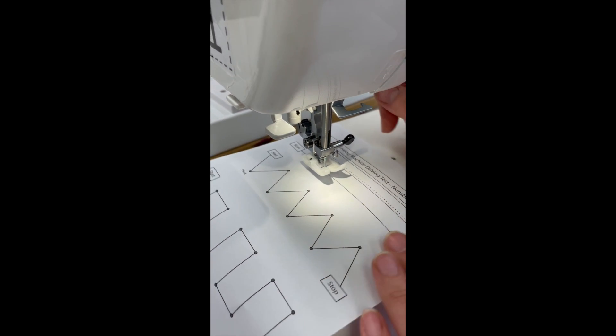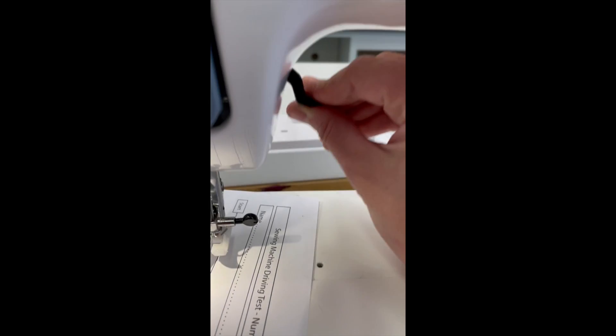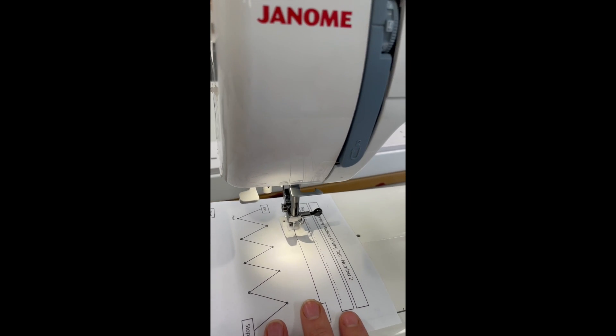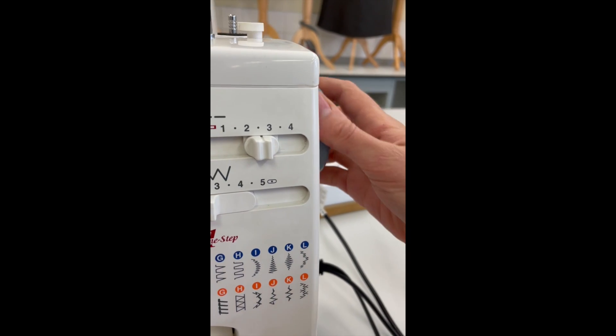Lift your presser foot up with the lever here. It will be down, lift it up. Turn the hand wheel so that the needle is out of the paper.